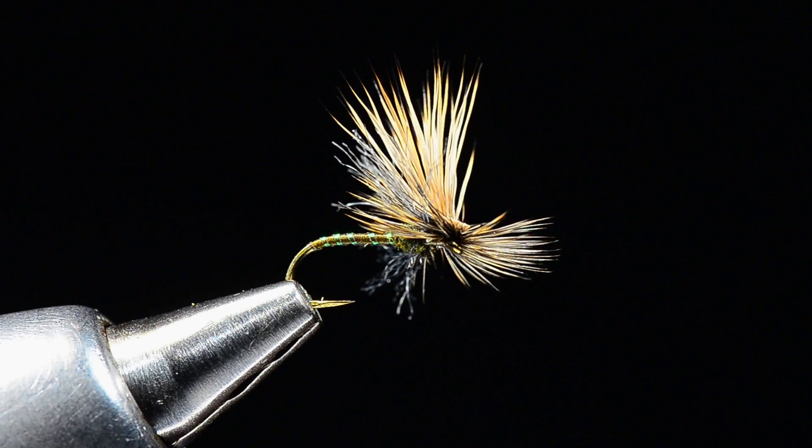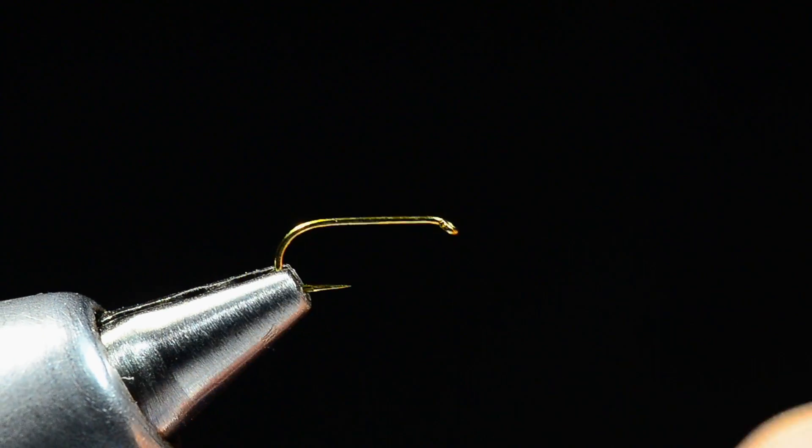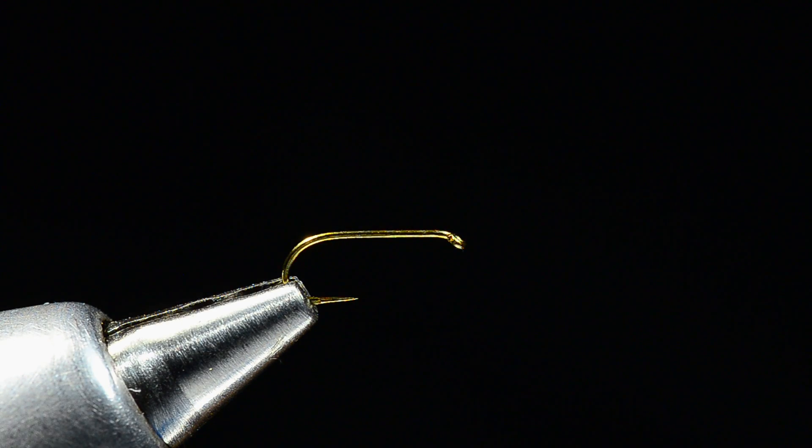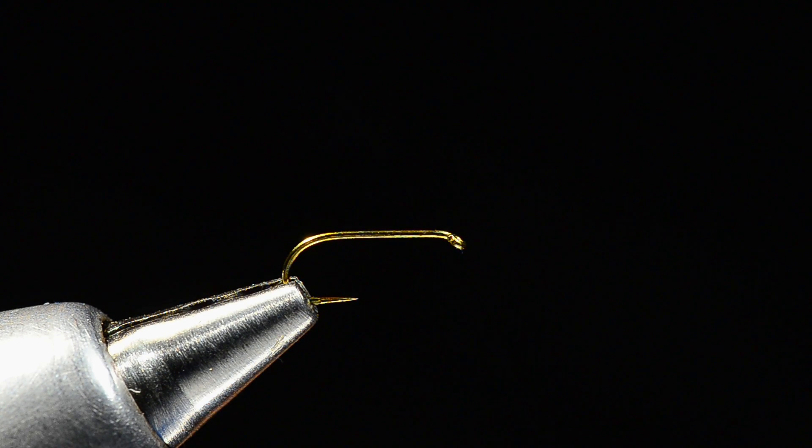I'm going to tie this on a Tiemco 100 SPBL, which is sort of my dry fly hook of favor. Mike ties it on a black hook which is totally cool, but most of those hooks are fine wire and I like this little bit stouter wire on this hook. I'm going to start off with a size 16 and obviously you can tie these in whatever sizes you want.